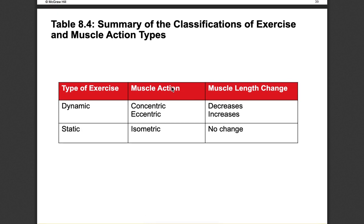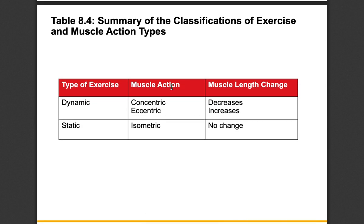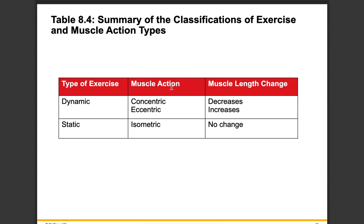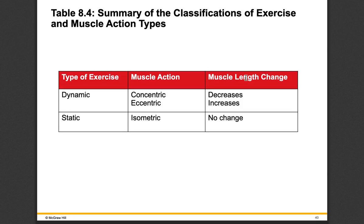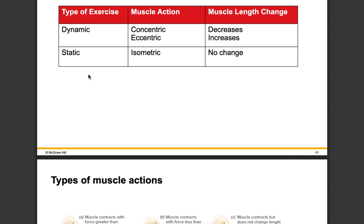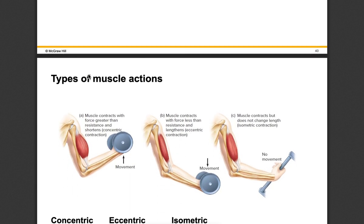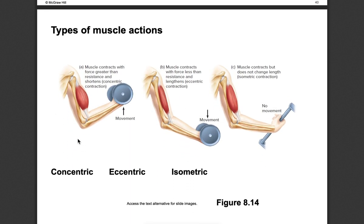Our muscles perform different actions: concentric, eccentric, and isometric. This relates to how the muscle is changing length. Knowing the difference between static and dynamic is important because it comes back up in other topics. Concentric refers to shortening of muscles, eccentric refers to lengthening of muscles, and isometric refers to no change in length — even when the muscle is active and still producing an action potential, excitation-contraction coupling is still occurring.